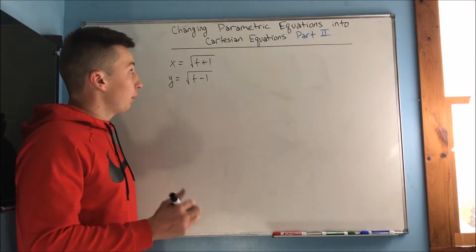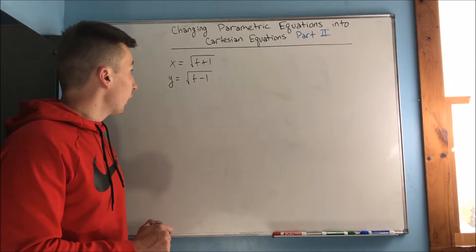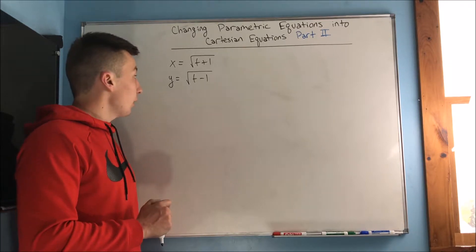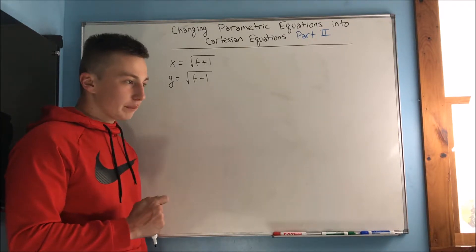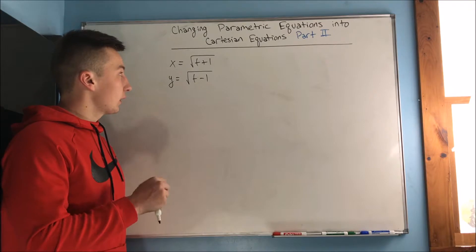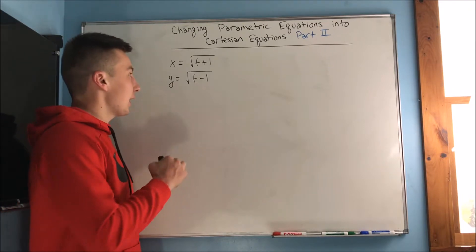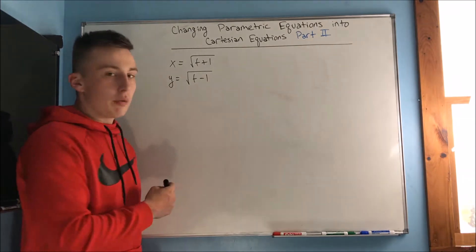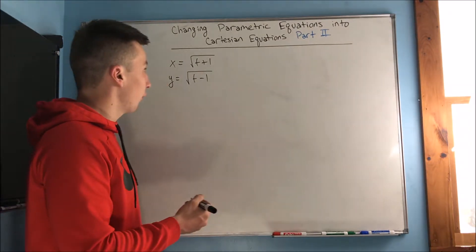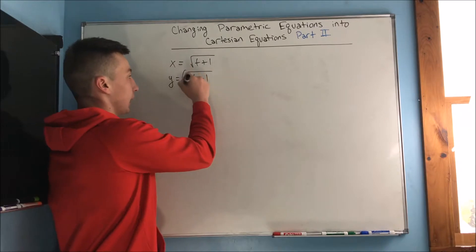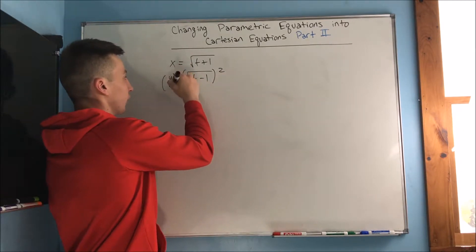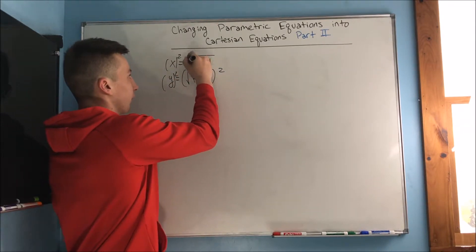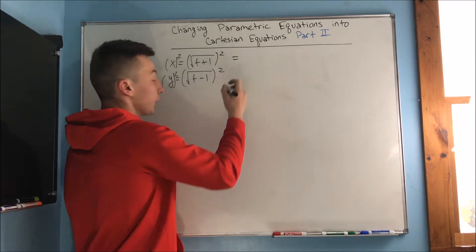We have our next set of parametric equations up on the board here: x equals the square root of t plus 1 and y equals the square root of t minus 1. What's kind of the blockade here? What's stopping us from putting these together? Well, that's the square root. The square root's kind of making this a little hard for us, so let's get rid of that square root. Let's square both sides.